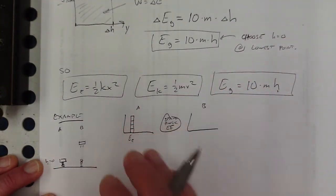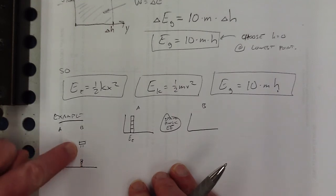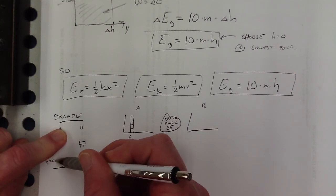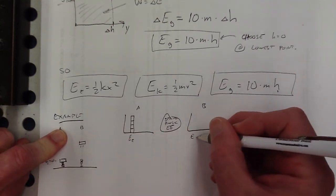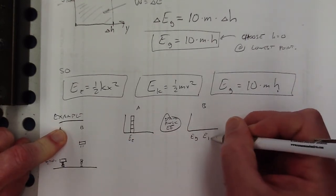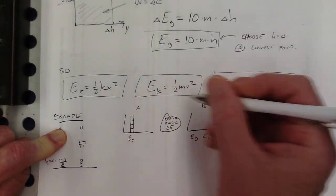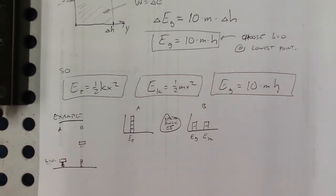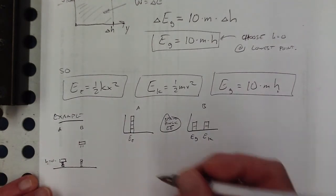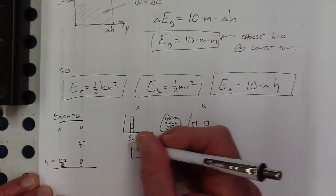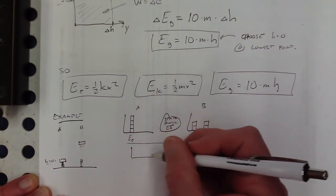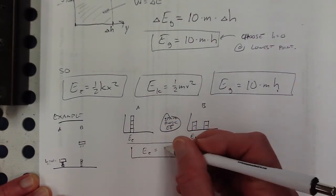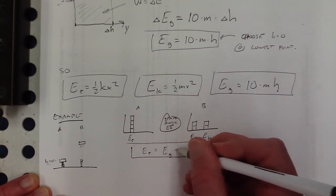And then here, it's moving up. It has not yet reached its highest point, but it's definitely above H equals zero. So it has some E_g and it's also moving. It has some E_k. So however you want to split up those four blocks is fine. I'm just going to do it that way.